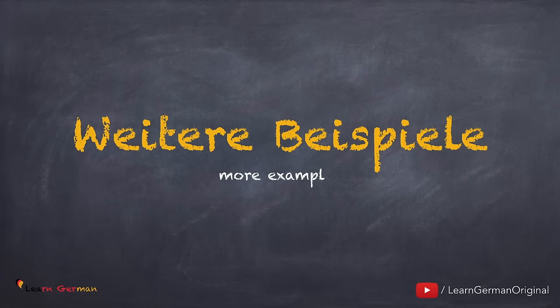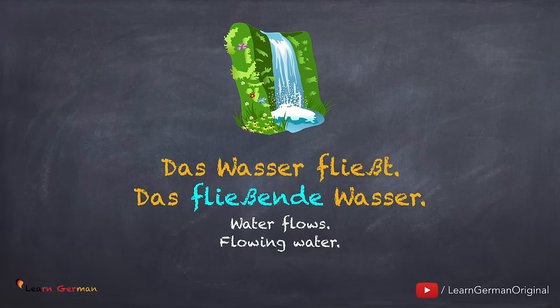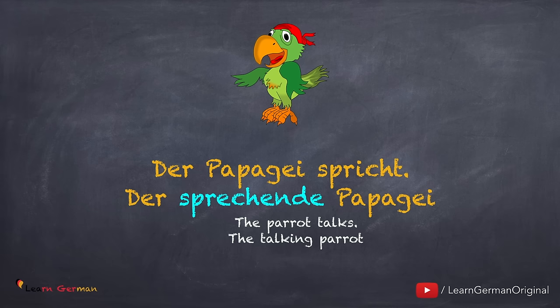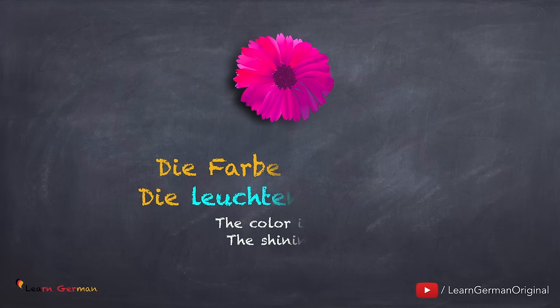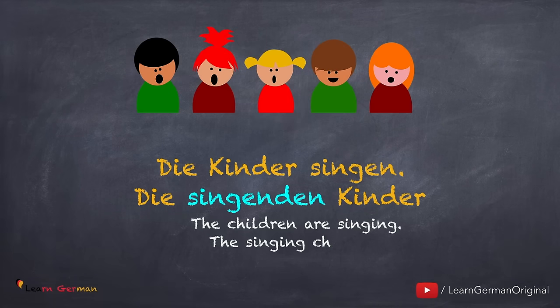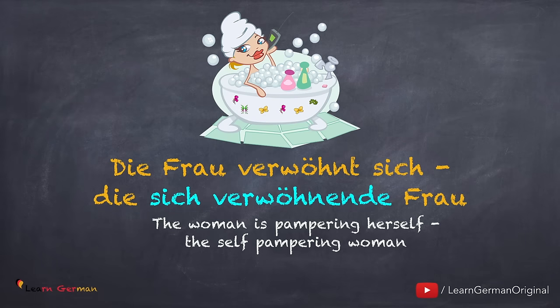Hier sind ein paar weitere Beispiele, wo man aus dem Verb ein Adjektiv formuliert: Das Wasser fließt → Das fließende Wasser. Der Papagei spricht → Der sprechende Papagei. Die Farbe leuchtet → Die leuchtende Farbe. Die Kinder singen → Die singenden Kinder. Alle diese Adjektive bekommen auch die richtigen Endungen. Was passiert, wenn wir ein Reflexivverb haben? Die Frau verwöhnt sich → Die sich verwöhnende Frau. Bei Reflexivverben steht sich vor dem Partizip 1.